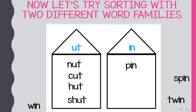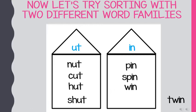Next is the word 'spin' — I hear the 'in' sound, I-N, 'in.' Last one: 'win' — 'in.' And last we have the word 'twin.' 'Twin' would go with the I-N word family again.